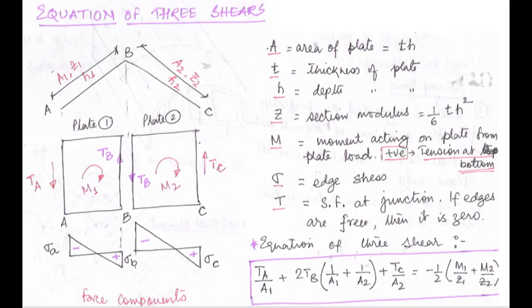Now let us start with the designing of the folded plate. We will first learn about the theory and the concept — that is the equation of the three shears — how to find out the different shear forces in the folded plate. Please look at the diagram: on the left side I have drawn the diagram, and on the right side I have given the description. So AB and BC is a folded plate structure. For part AB I have written A1, Z1 and H1, and for part BC, A2, Z2 and H2.